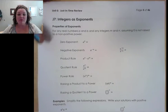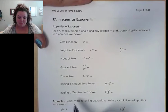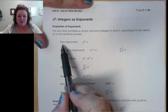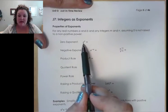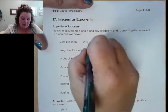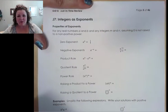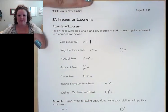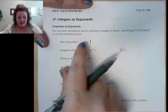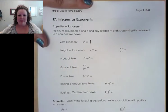We're going to start by refreshing or reviewing our exponent rules. The first one is our zero exponent rule, which states that any number raised to the zero power is one. Unless the base is zero itself, then that's undefined, but we will not be dealing with that in this class. So for our purposes, any number raised to the zero power is going to be one.